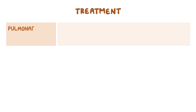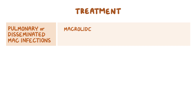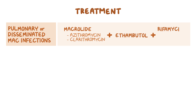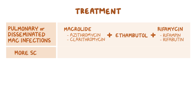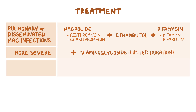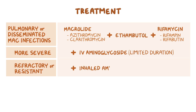For treatment of pulmonary and disseminated MAC infections, a combination of a macrolide, such as azithromycin or clarithromycin, plus ethambutol and a rifamycin, such as rifampin or rifabutin, is used. In more severe disease, an intravenous aminoglycoside may be used for limited duration. For those with refractory disease, or whose organisms have developed macrolide resistance, the addition of inhaled amikacin or clofazimine can also be considered.